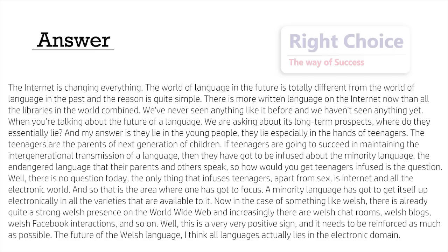My answer is they lie in the young people — they lie especially in the hands of teenagers. The teenagers are the parents of the next generation of children. If teenagers are going to succeed in maintaining the intergenerational transmission of a language, then they have got to be enthusiastic about the minority language, the endangered language that their parents and others speak. The only thing that engages teenagers today, apart from sex, is the internet and all the electronic world, and so that is the area where one has got to focus.